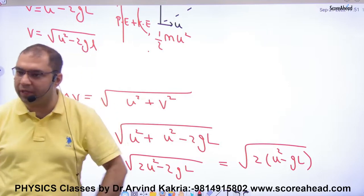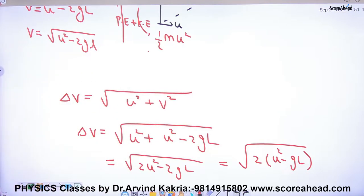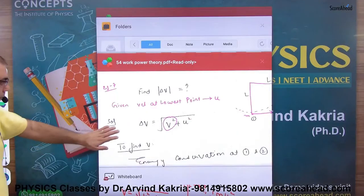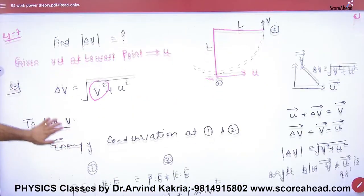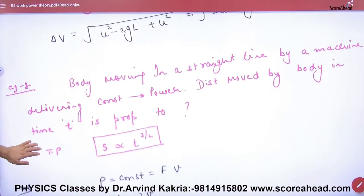This is how we solve delta-v for objective sheet problems. Clear so far. Now the next question inside this sheet.